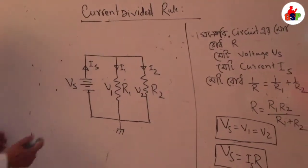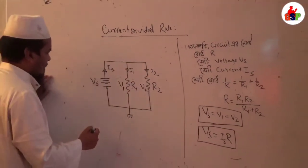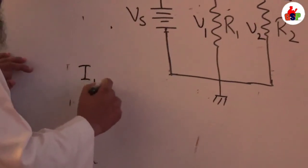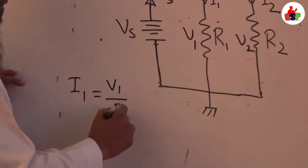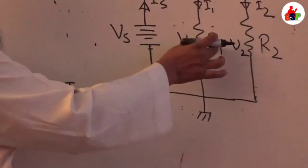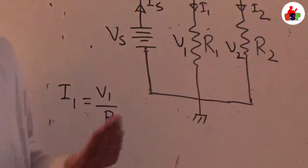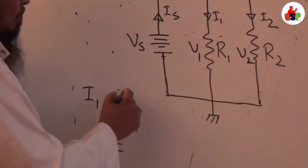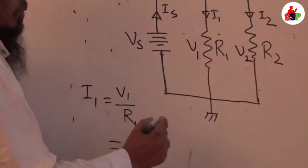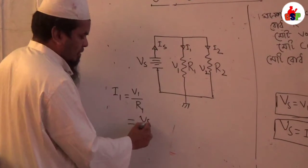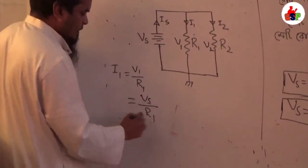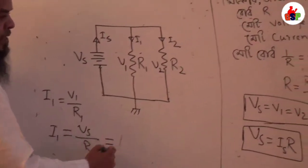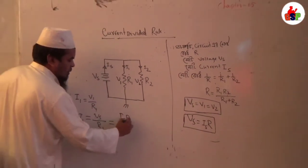So, we need to take the branch set current. I1 is equal to V1 bar R1. This is branch set current. We need to take the branch set current. Now, V1 is equal to V2 is equal to Vs. Now, we need to take the branch set: Vs is equal to Is into R.